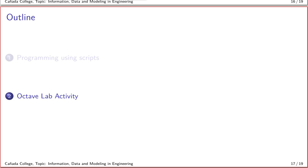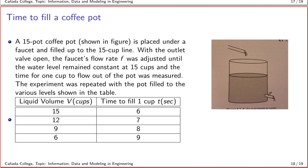You have a coffee pot here that is placed under a faucet and filled up to the 15-cup line. When the outlet valve is open, the faucet's flow rate F is adjusted so that the water level remains constant at 15 cups, and the time for one cup to flow out of the pot is measured. This experiment is repeated with the pot filled to various levels shown in the table. For example, when filled to 15 cups, the time to fill one cup is 6 seconds; when filled to 12 cups, it's 7 seconds, and so on.